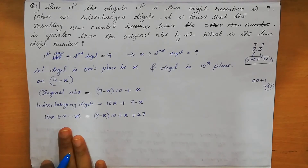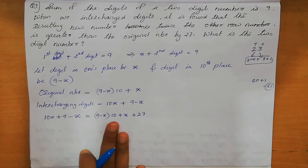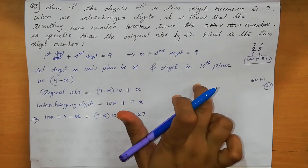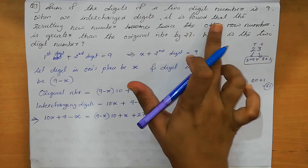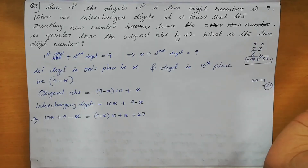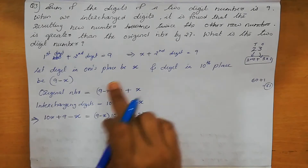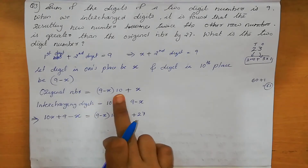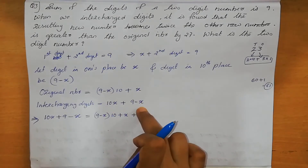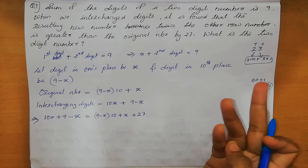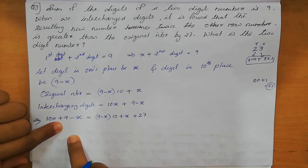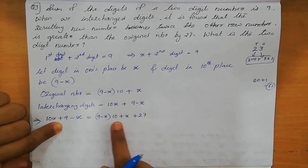The result is greater than the original number. When interchanging the digits, this should equal the original number plus 27. Digit in 1's place is X, digit in 10th place is 9 minus X — from the condition: sum of digits equals 9, so 10th place equals 9 minus X. Original number is X plus 10 into 9 minus X. Next step, X becomes 10X in 10th position, and 9 minus X is in 1's position — so new number is 10X plus 9 minus X equal to 9X plus 9.